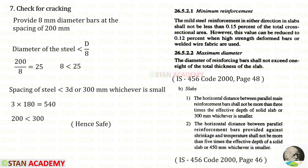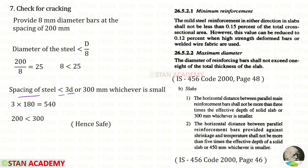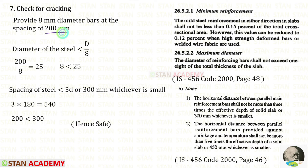Now let us see the third condition. From page number 46, the horizontal distance between parallel main reinforcement bars shall not be more than 3 times the effective depth of the slab or 300 millimeter, whichever is smaller. Our effective depth is 190, so 3 into 190 equals 540. Therefore 300 is less than 540, and we use 300 for comparison. Our spacing is 200 millimeter, which is less than 300, so it is safe.